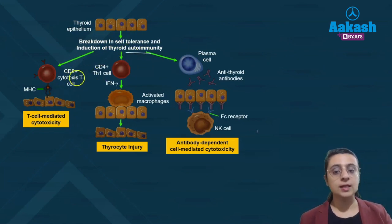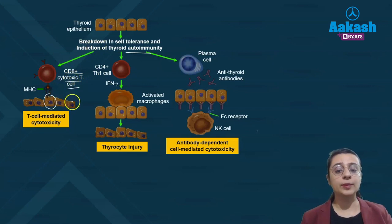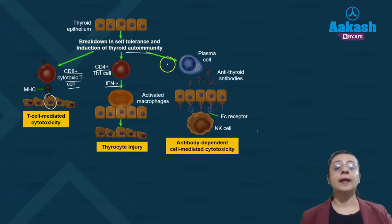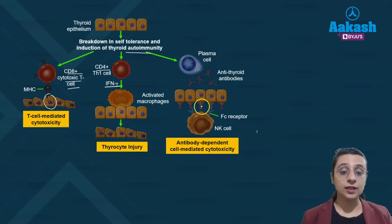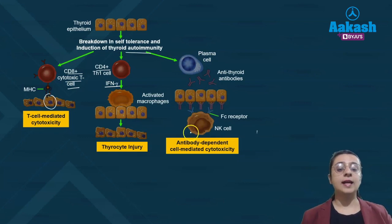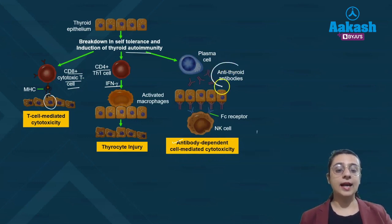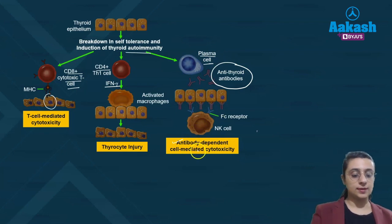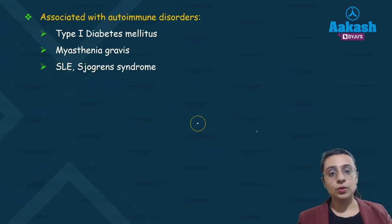In Hashimoto's, defects in autoimmune mechanisms activate CD8+ cytotoxic T cells, causing direct cytotoxicity of thyroid follicular epithelial cells. Alternatively, activation of CD4+ T helper cells releases cytokines such as interferon-gamma, activating macrophages and causing thyrocyte injury. Anti-thyroid antibodies formed by plasma cells against thyrocytes also lead to antibody-dependent cell-mediated cytotoxicity.